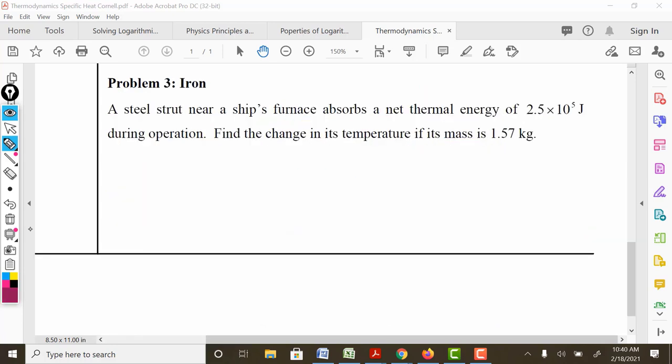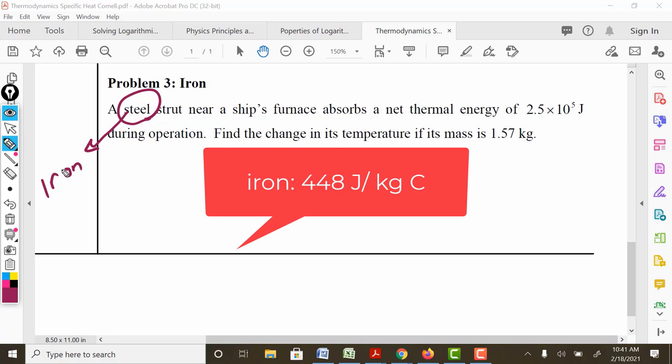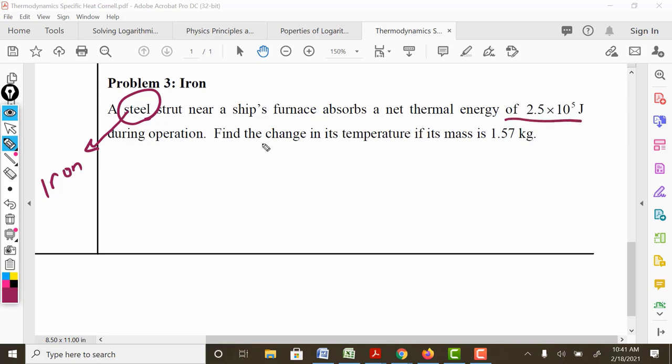For this problem, we have a steel strut. Now, if you look at your table, steel is not listed on there. But steel tends to be associated with iron. Because iron is the main ingredient of steel. Steel is pretty much an alloy composite of different metals. And the predominant metal in steel production is iron. So we have a steel strut. It takes this much energy to operate. We want to find the change in temperature if this is the mass.